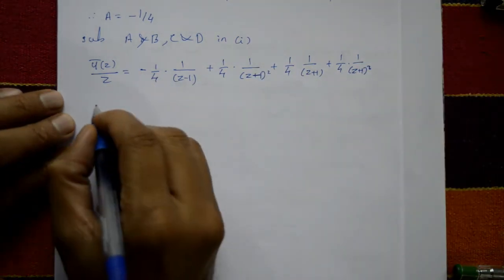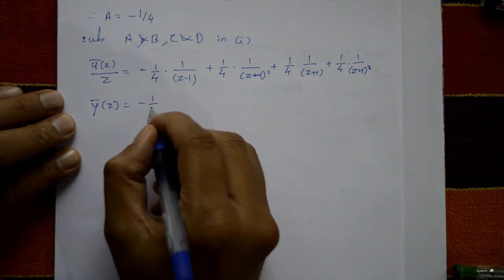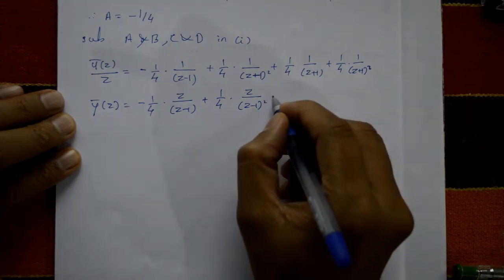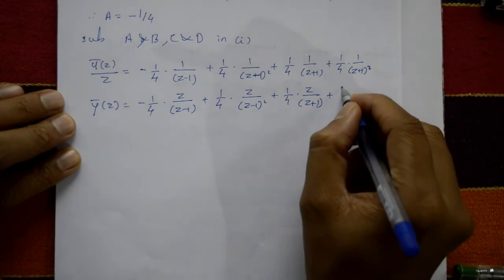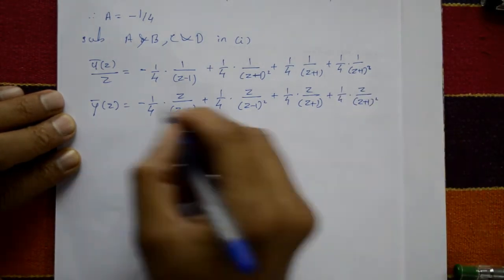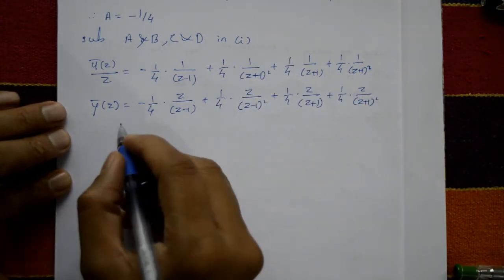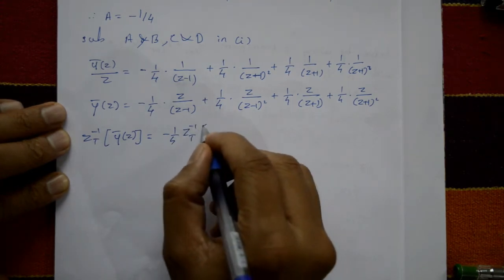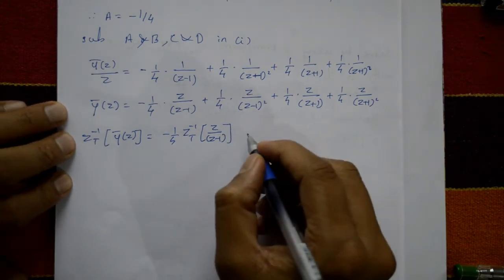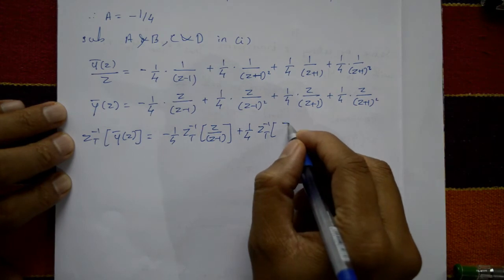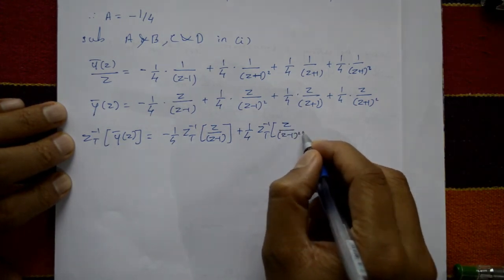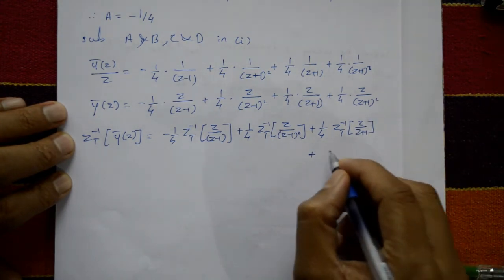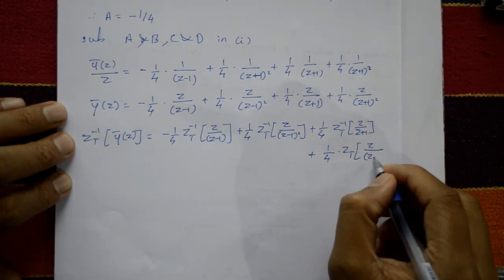Multiplying both sides by z: Y-bar(z) = −(1/4)·z/(z−1) + (1/4)·z/(z−1)² + (1/4)·z/(z+1) + (1/4)·z/(z+1)². Now applying the inverse Z-transform to each term.